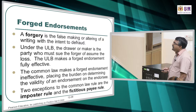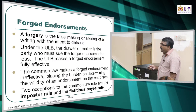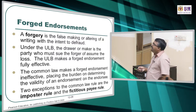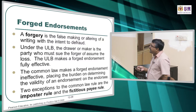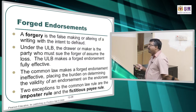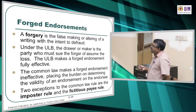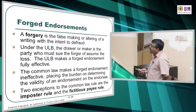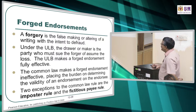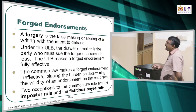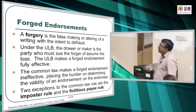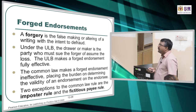Forgery is the false making and altering of a writing with the intent to defraud. Under ULB, the drawer or maker is the party who must sue the forger when a loss takes place. The ULB makes a forged endorsement fully effective — meaning once the forger is found, we can bring the person to court. Common law, by contrast, makes the forged endorsement ineffective, placing the burden of determining the validity of the endorsement on the endorsee.